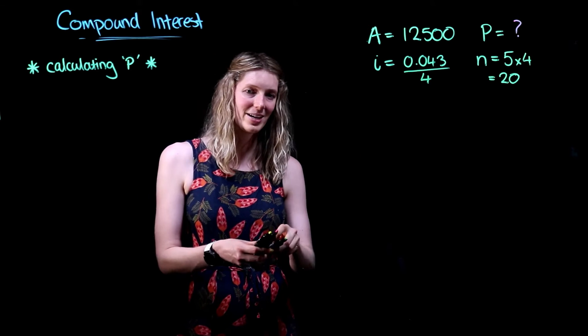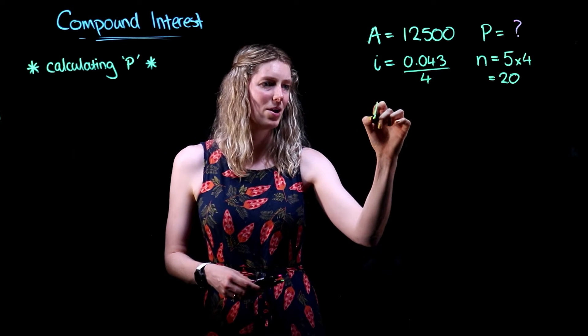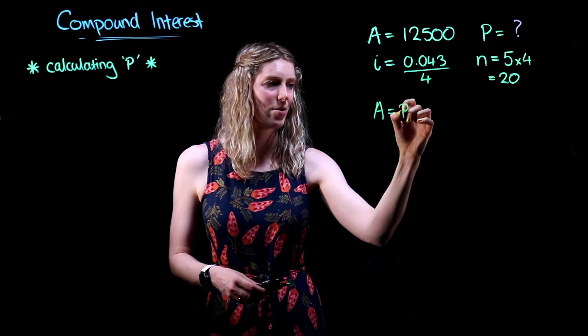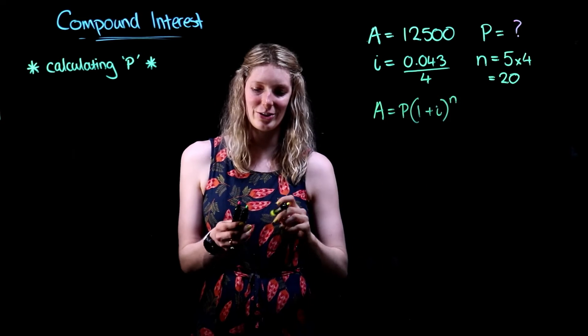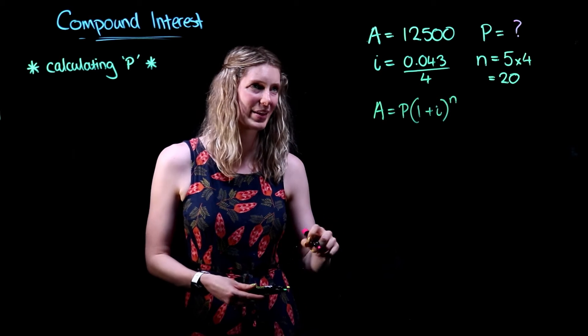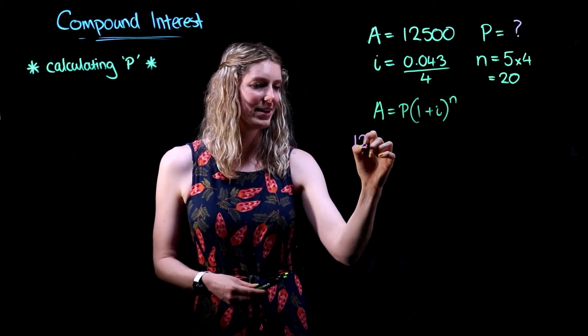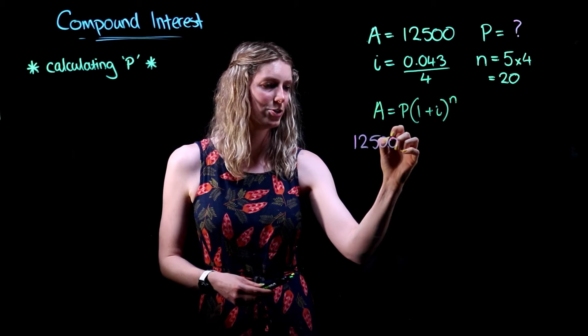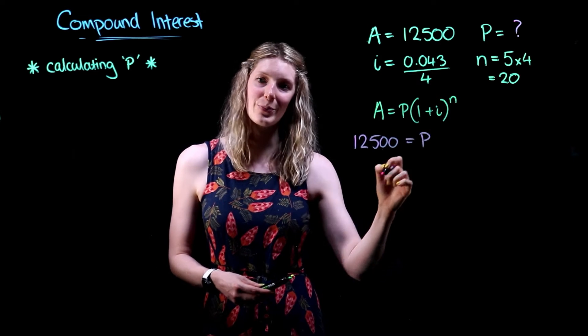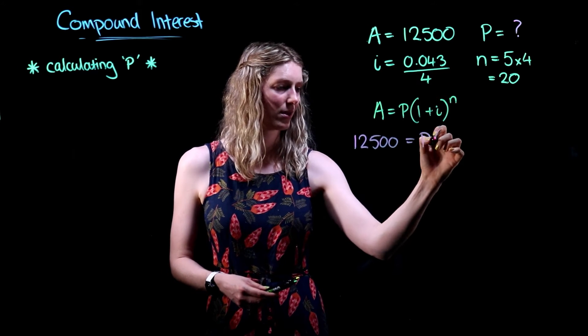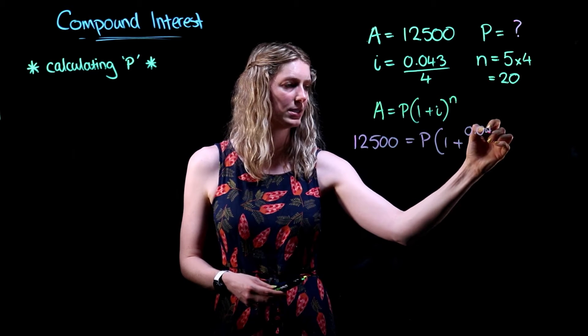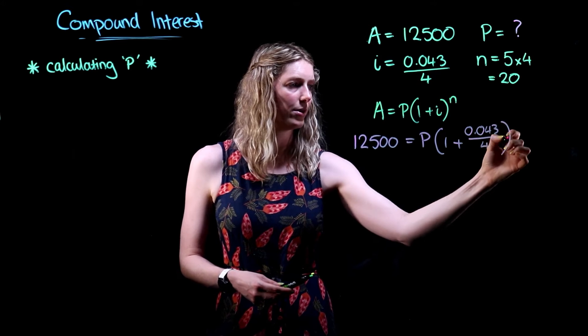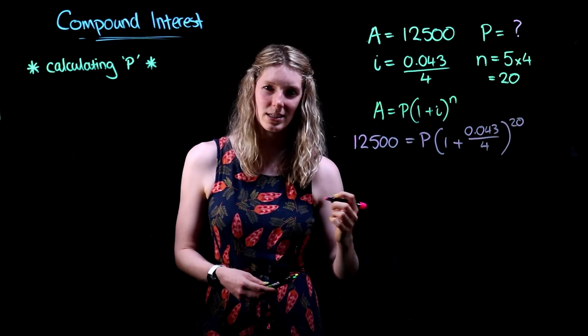Now that we've identified three out of our four variables, we're going to place it into our compound interest formula and solve for our unknown principal. So we've been given an A value of 12,500. Our principal is unknown. We have one plus our interest rate of 0.043 on four, and all of this is to the power of 20.